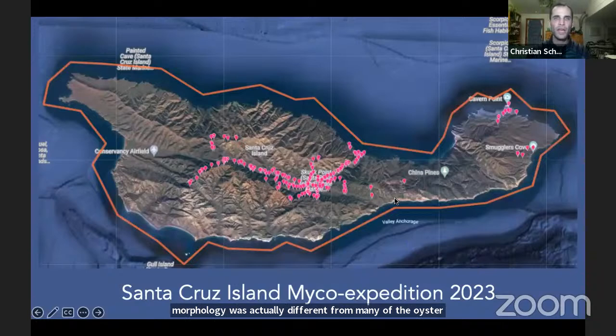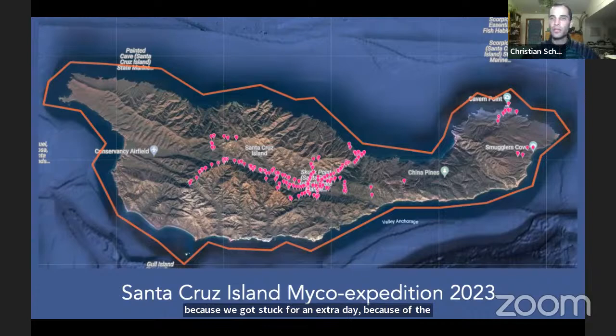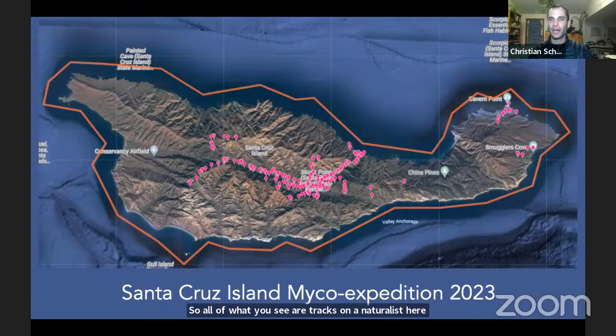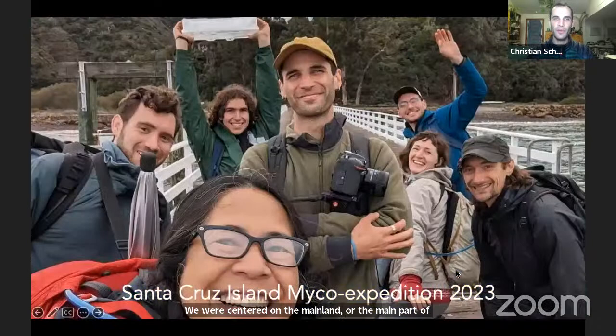Most recently we were on Santa Cruz Island at the beginning of the year, January 2nd through the 7th — we got stuck for an extra day because of the atmospheric river flooding the main road. We were not able to use vehicles as planned. All of the iNaturalist tracks you see were covered on foot — we scattered all over the island. A few of our friends were on the east end of the island unbeknownst to us, also recording fungi at the same time.